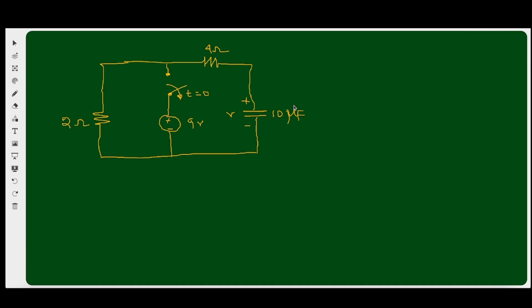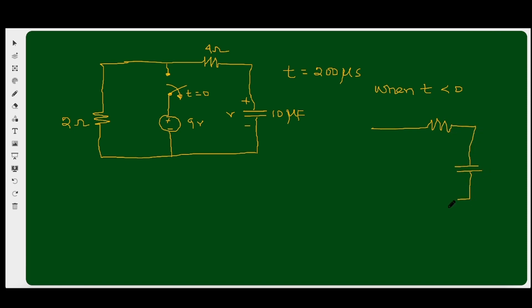Let us solve an example. We are going to find the voltage v at t = 200 microseconds. Looking at the circuit, there is a switch. Before t = 0, the switch was closed; after t = 0, the switch was opened. When t < 0 (switch closed), we have a 4-ohm resistor, a 10-microfarad capacitor, a 2-ohm resistor, and a 9-volt DC source.